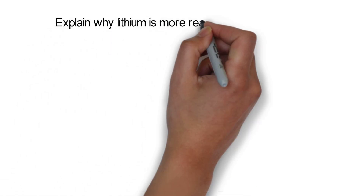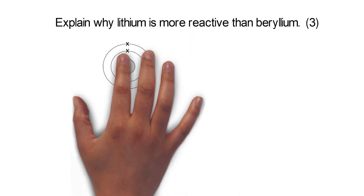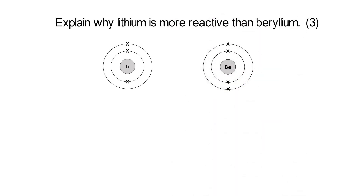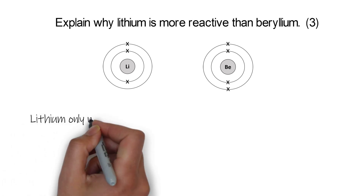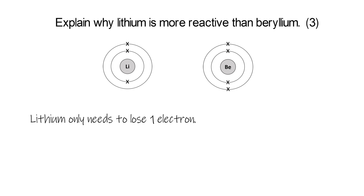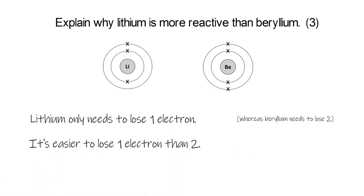Now we'll just have a think about comparing two elements that are in different groups. For example, lithium — why is lithium more reactive than beryllium? Well, if we think about the structure of lithium, it's in group 1, so it's got one electron in its outer shell. Whereas beryllium is in group 2, it's got two in its outer shell. Lithium only needs to lose one electron to gain a full outer shell — it's nearly there. Beryllium needs to lose two, and that is going to be more difficult. So lithium is more reactive because it's easier to just lose one electron than it is to lose two. This would also work for comparing groups 6 and 7.